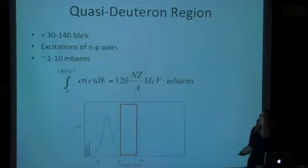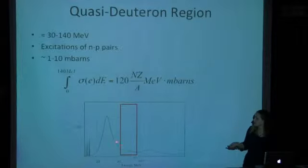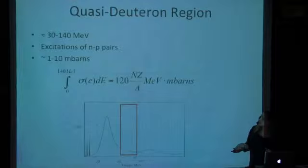The next region is so-called quasi-deuteron region. Starting at about 30 MeV, the energy of the photon becomes large enough to start interacting with the subnuclear particles and subnuclear structure. For example, several nucleons together, and one of the examples is neutron and proton, the most common example, and that's why it's called deuteron. It's not really a deuteron, but it's a quasi-deuteron regime. Typically, the cross-section there is from 1 to 2 millibarns, not very large, so we try not to go above 30 or 40 MeV.